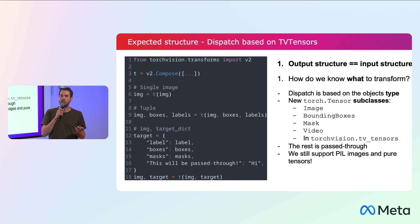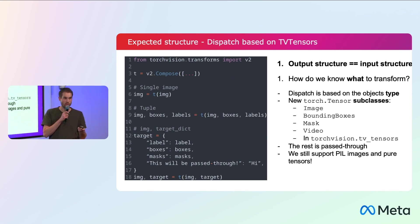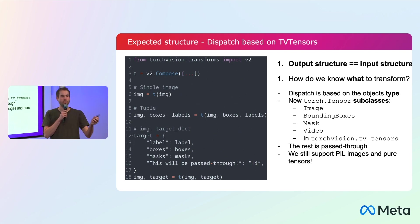The main question is: how do the transforms actually understand that they need to transform boxes and masks the way they should? The way transforms know how to handle these things is by looking at the type of the objects. The boxes would have to be of the BoundingBoxes tensor subtype, and masks would have to be of a mask subtype. We have introduced new tensor subclasses in TorchVision — they are very thin wrappers around the normal tensor. Bounding boxes have metadata attached, specifically the size of the image they refer to, so they can be transformed properly.